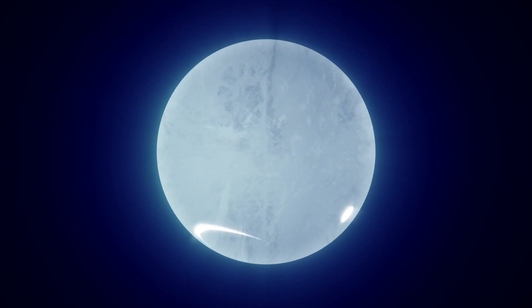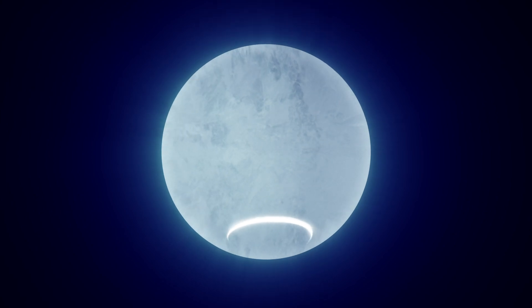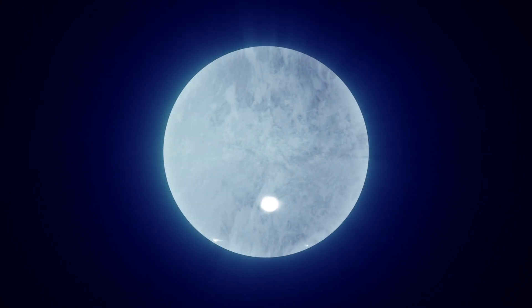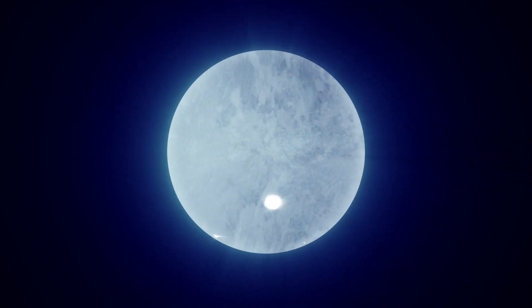A pulsar is so dense that its gravity bends the fabric of space-time around it. NICER's precise X-ray measurements allow scientists to take advantage of this effect to see light from the far side of the pulsar.